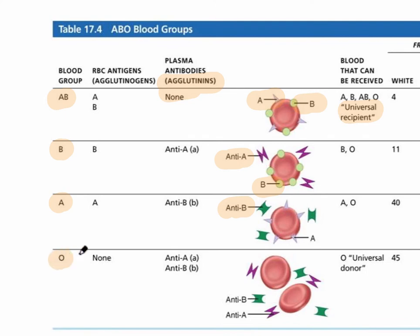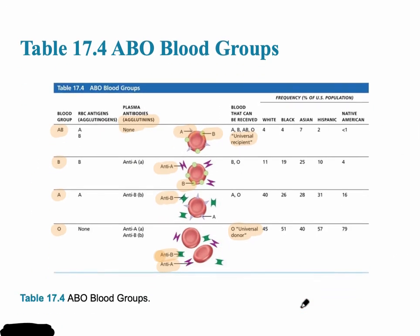Type O is the universal donor — it does not have antigens on it, so it sees everything as foreign and has both the anti-A and anti-B antibodies. More specifically, O negative is the best universal donor because it has not only no ABO antigens, but also no RH factor.